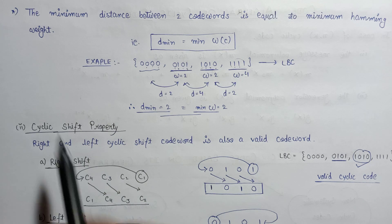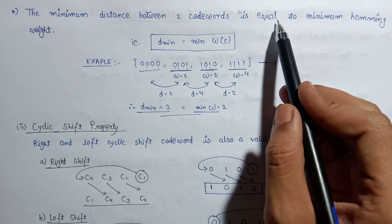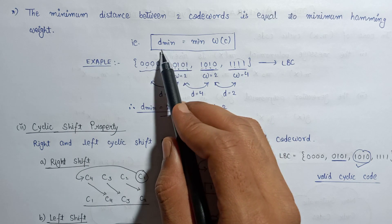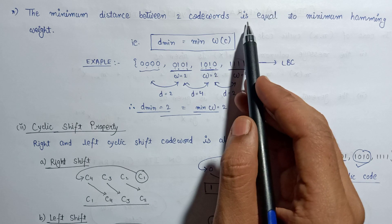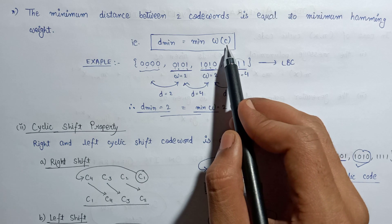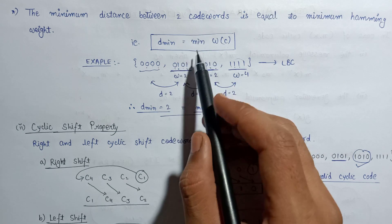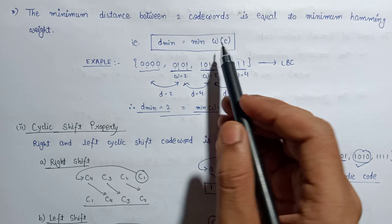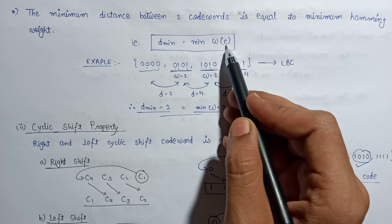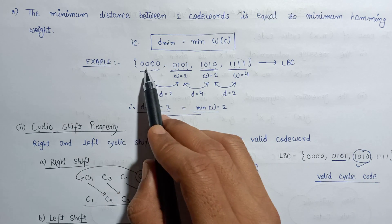The third part of the linearity property states that the minimum distance between two codewords equals the minimum Hamming weight between the codewords. Mathematically, d_min = min{w(c)}, where d_min is the minimum distance between two codewords, w represents the Hamming weight of a codeword c, and c represents the codeword.